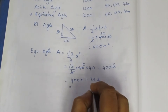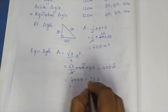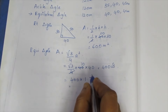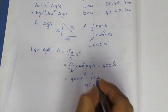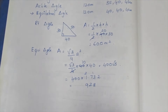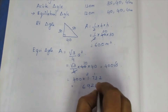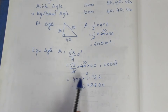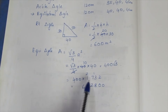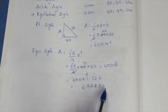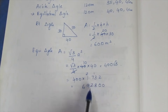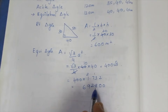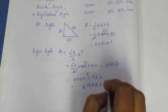Carrying out the multiplication: (1.732 × 1600) / 4. Computing 1.732 × 1600 = 2771.2, then dividing by 4 gives approximately 692.800 m². So the area of the equilateral triangle is 692.8 m².